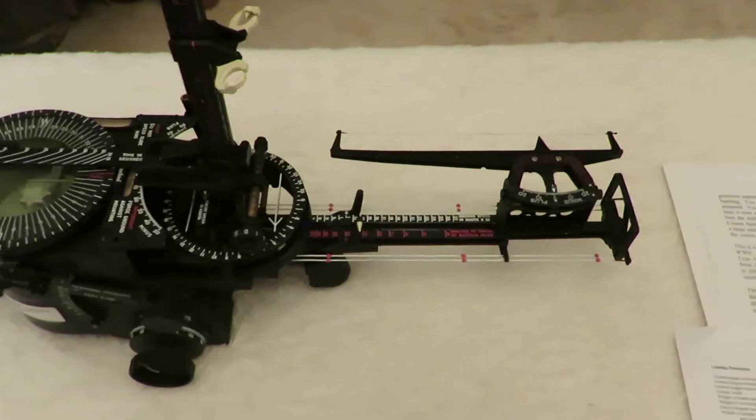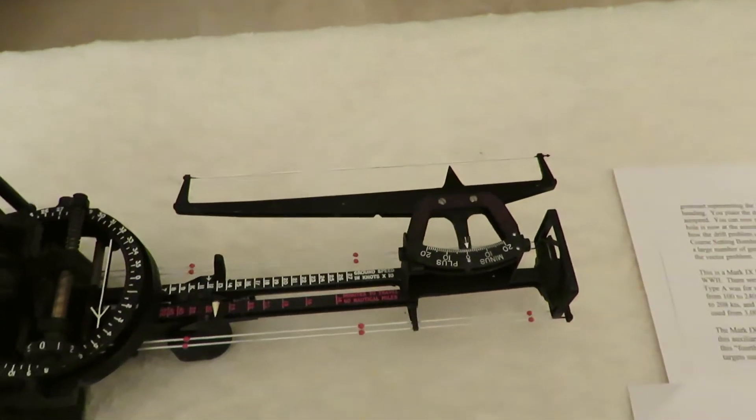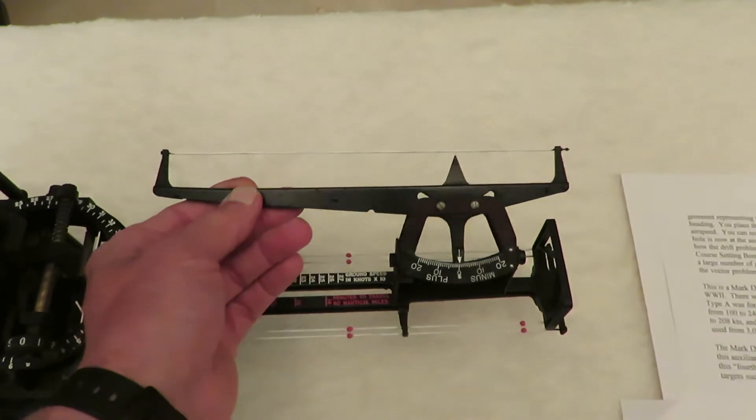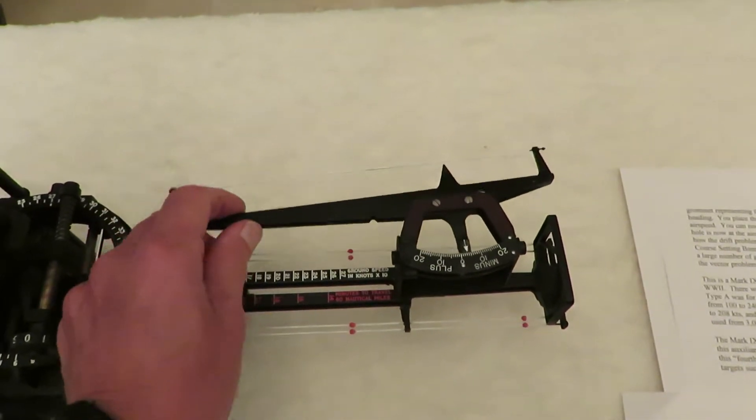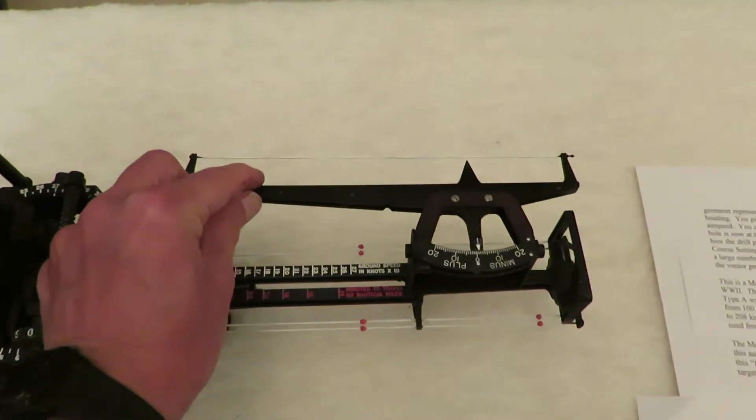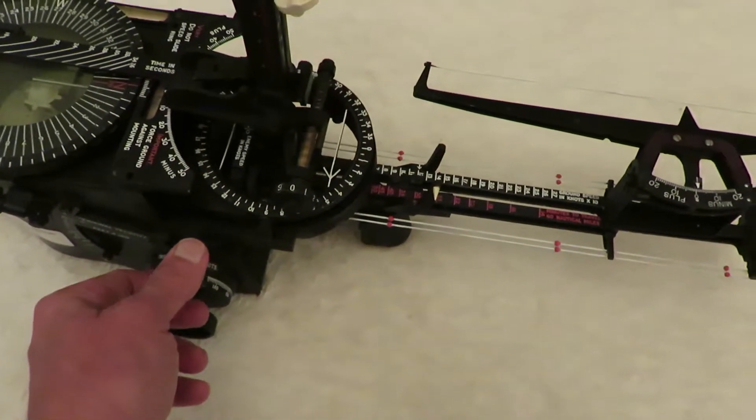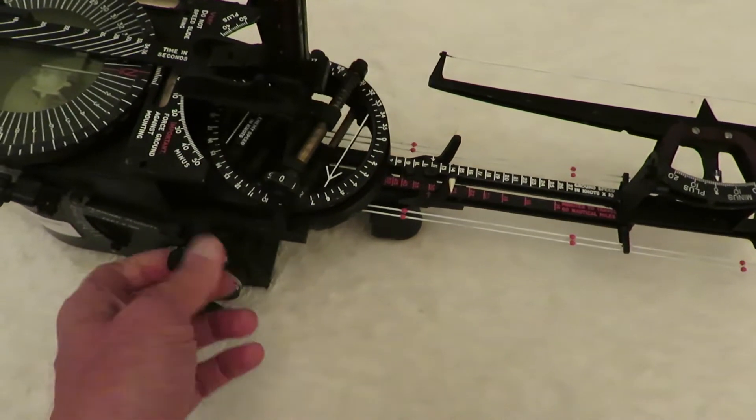The Mark 9 had some newer features over earlier models, including this auxiliary drift wire, which made finding the drift angle easier, and this fourth vector component, which allowed for bombing moving targets such as ships at sea.